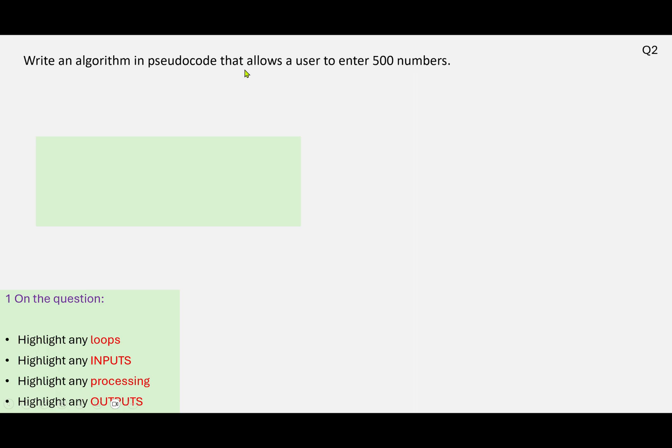And we also have the input here allowing the user to enter a number, so we can annotate those, we've got our input, we've got a loop. We don't have to do anything with the numbers, so there's no processing, and we're not outputting anything, so we can leave it at that. So let's go ahead now and use what we've annotated to write our answer.